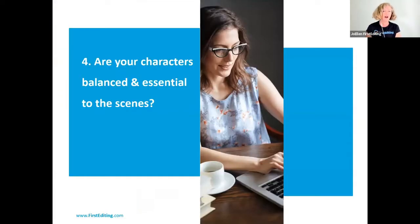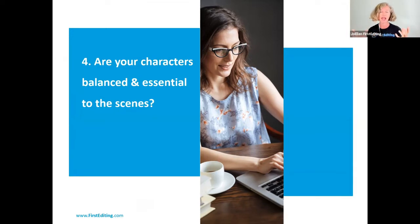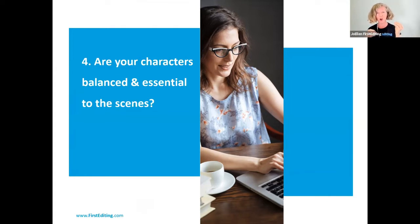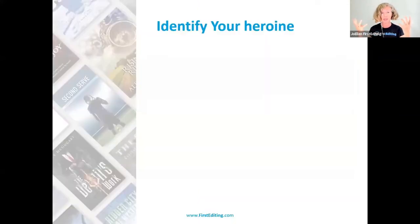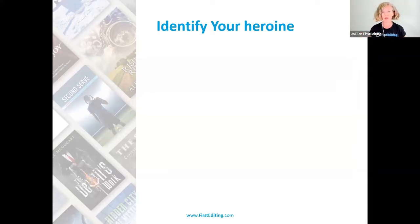Are your characters balanced and essential to each and every scene? The editor takes a look at the entire manuscript and looks at how many words are in each scene, how big is the chapter, which characters are in the scenes, are they essential to the scene, and are they given the correct amount of acknowledgement? It really does come down to balance. If you have one scene that's extremely large, it should be for your protagonist — and if not, it should have a huge impact on your protagonist at least.